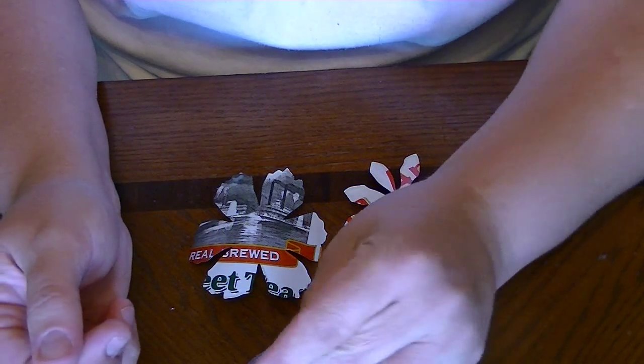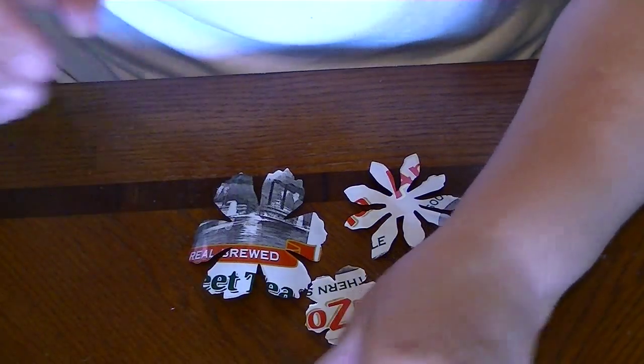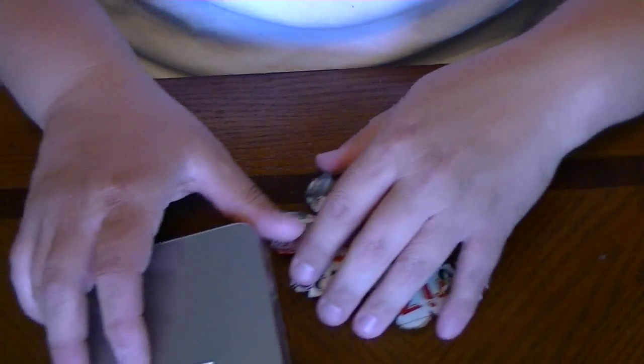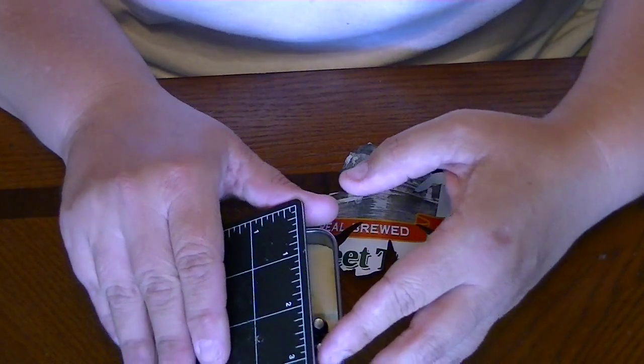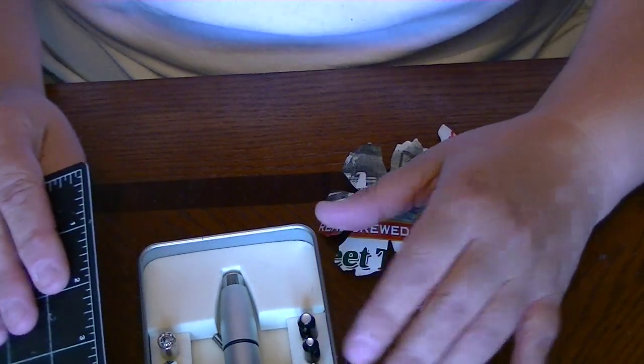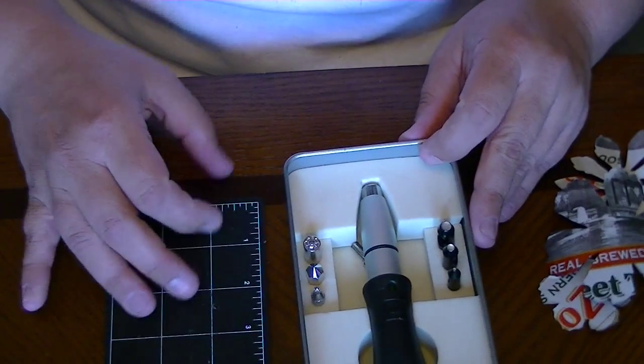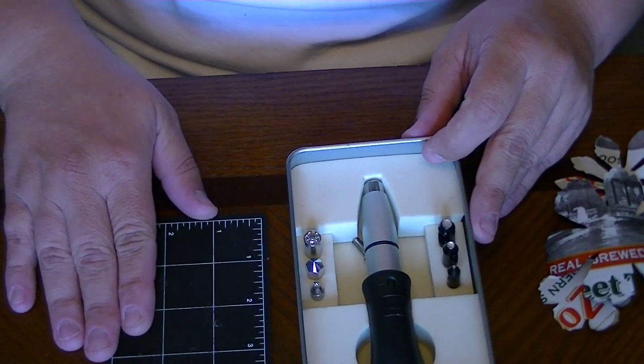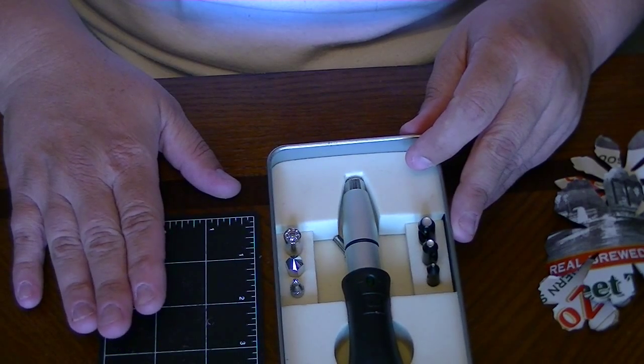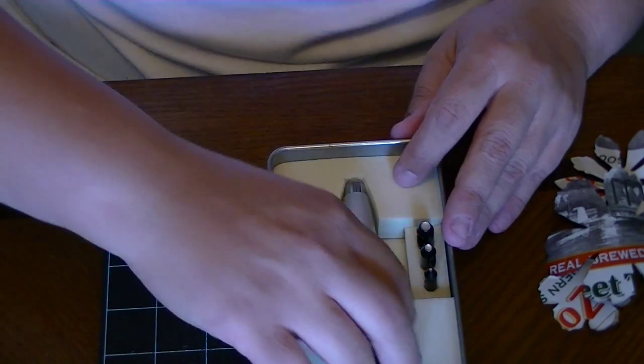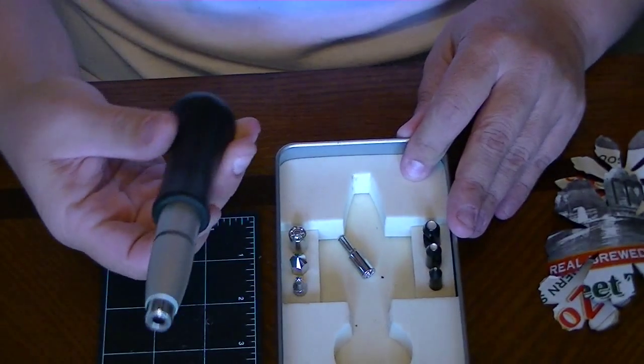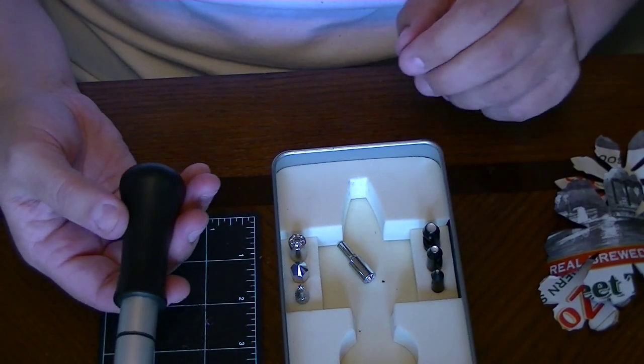And of course you'll need something to set that with. So here's this fancy schmancy machine, manually operated of course, found in the same section of your craft store that you'll find your eyelets. This is your eyelet setter. It comes with a board to do your punching on because it's pretty abrasive on your furniture, so you will have your handle that comes with several different attachments.